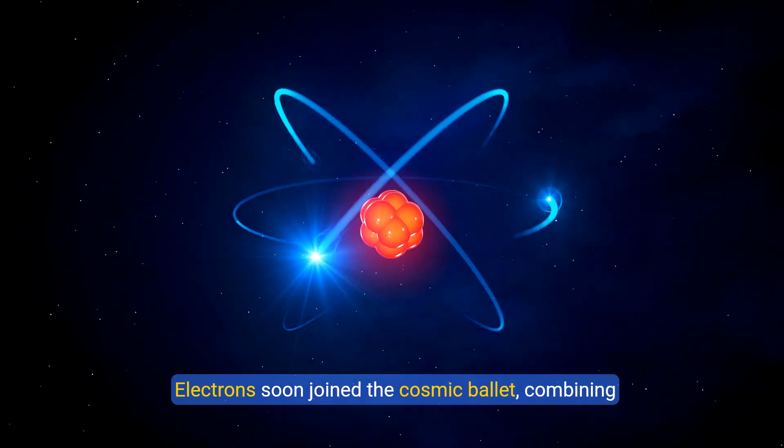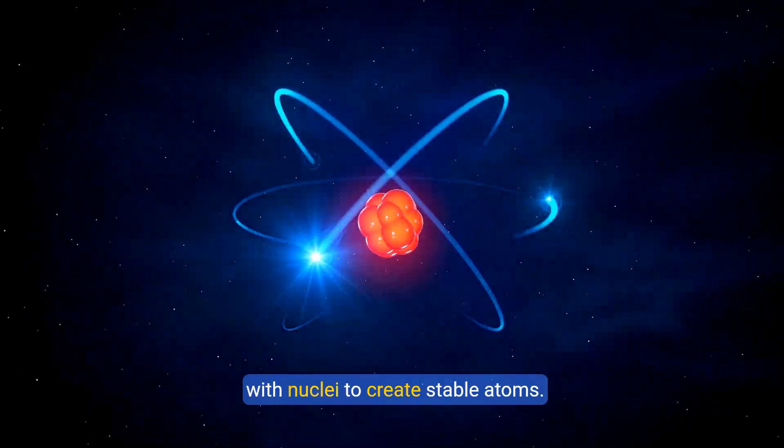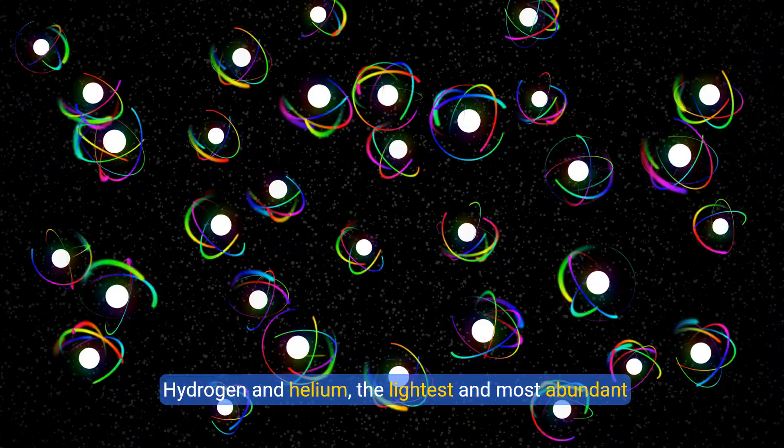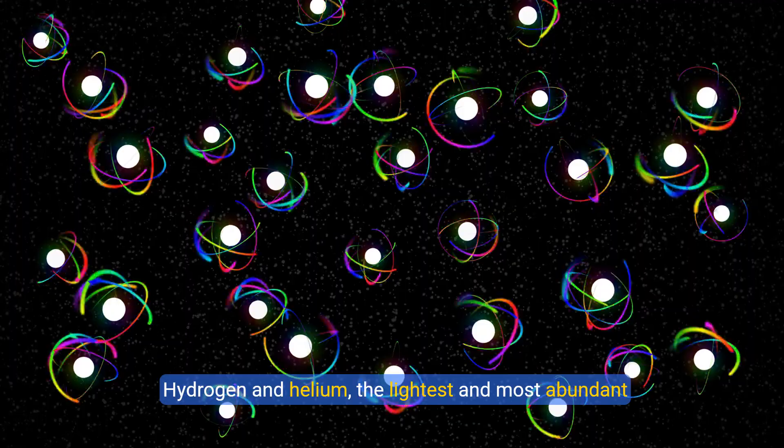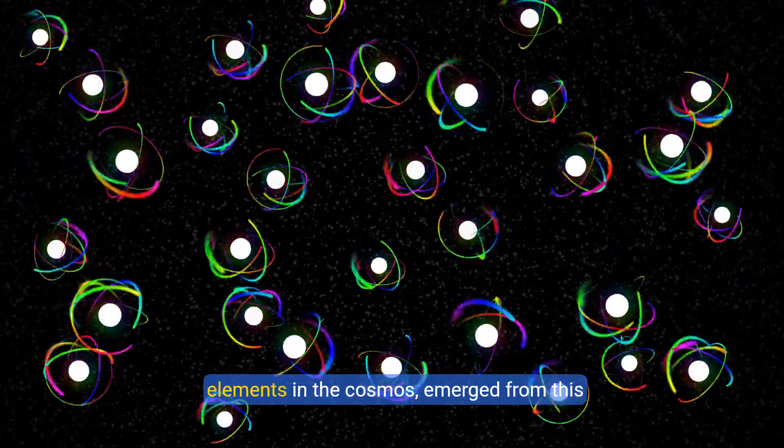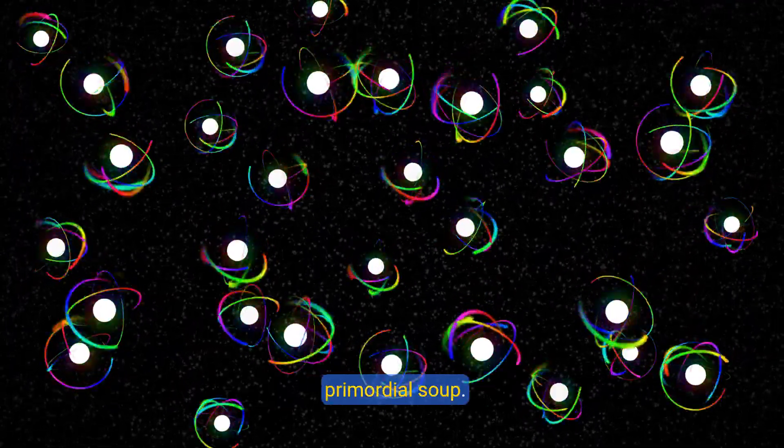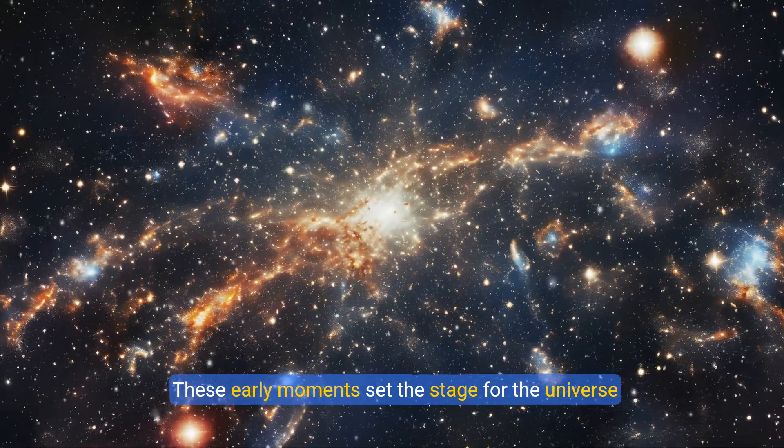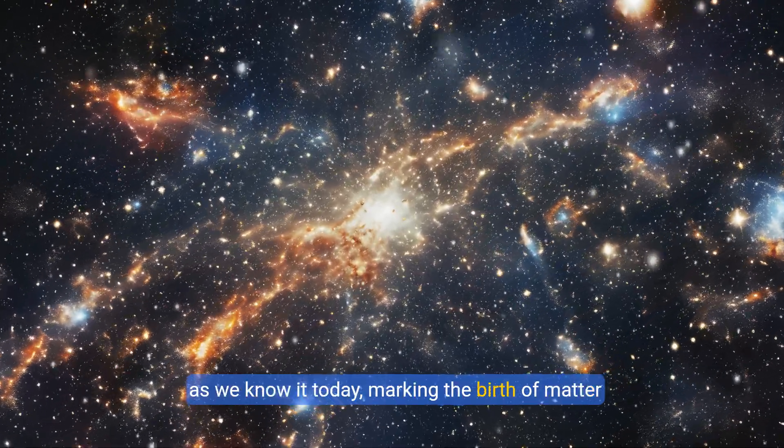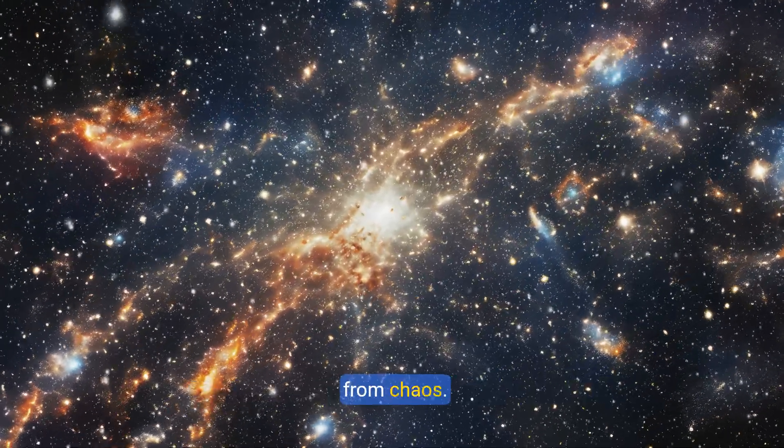Electrons soon joined the cosmic ballet, combining with nuclei to create stable atoms. Hydrogen and helium, the lightest and most abundant elements in the cosmos, emerged from this primordial soup. These early moments set the stage for the universe as we know it today, marking the birth of matter from chaos.